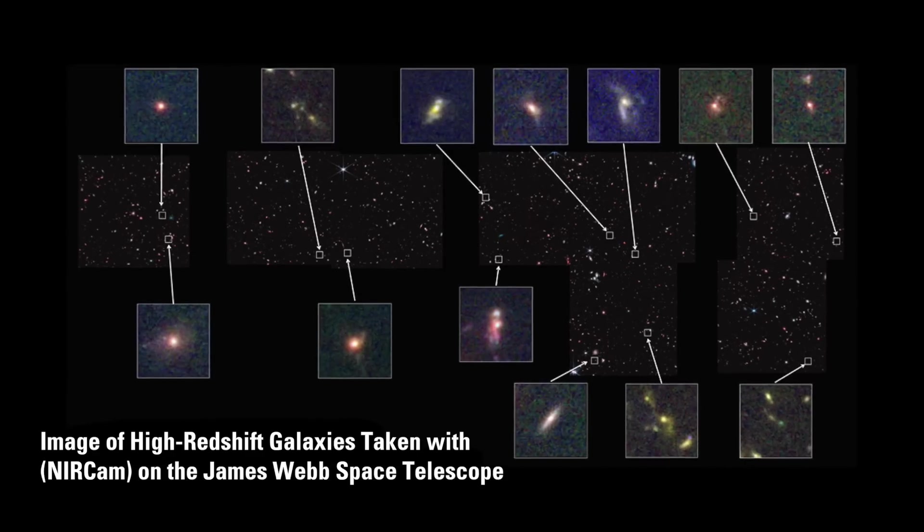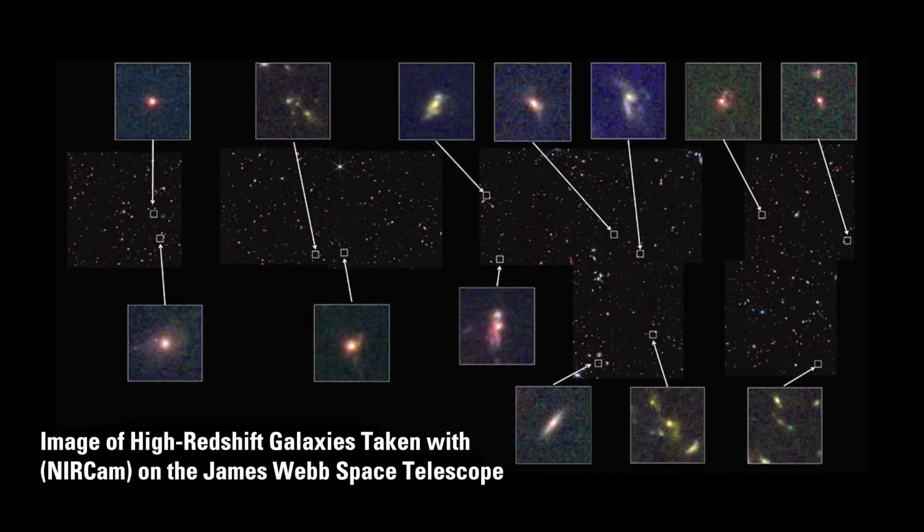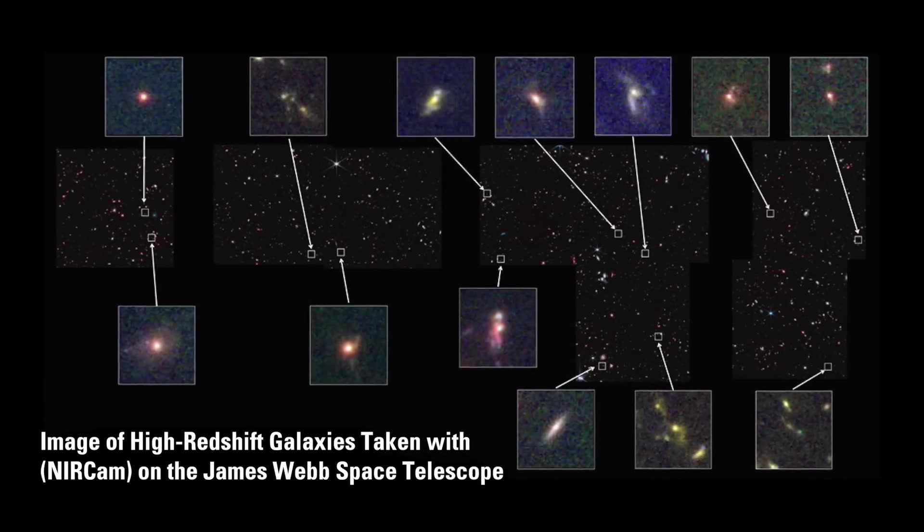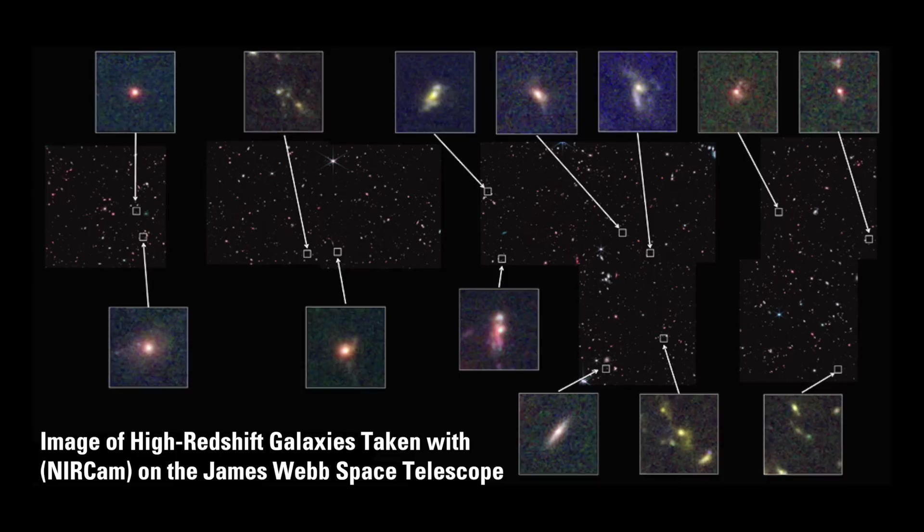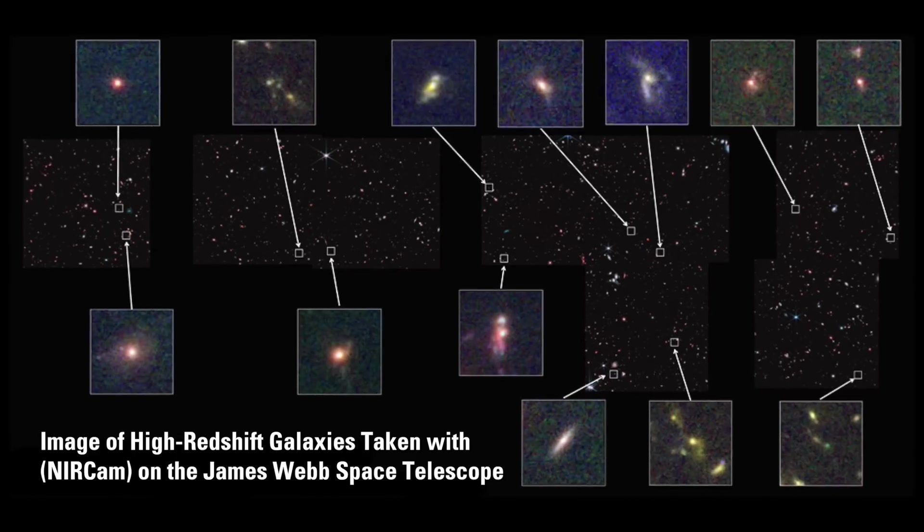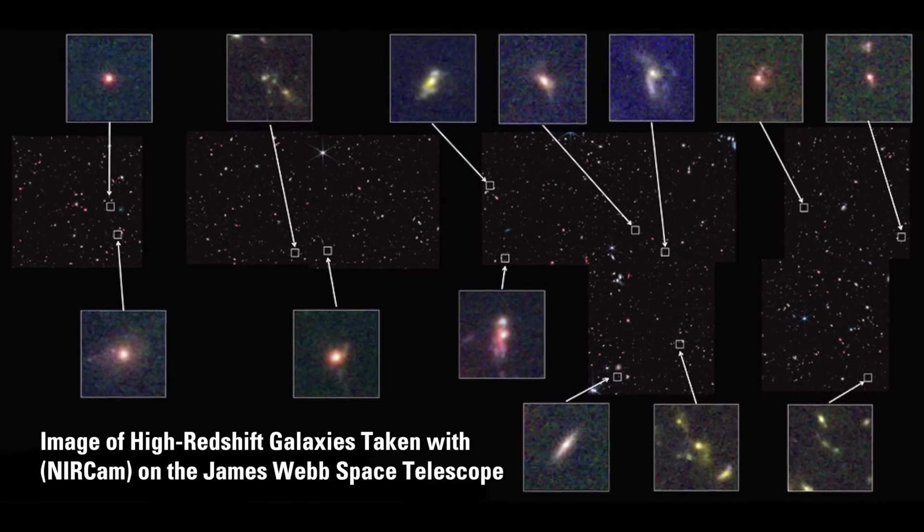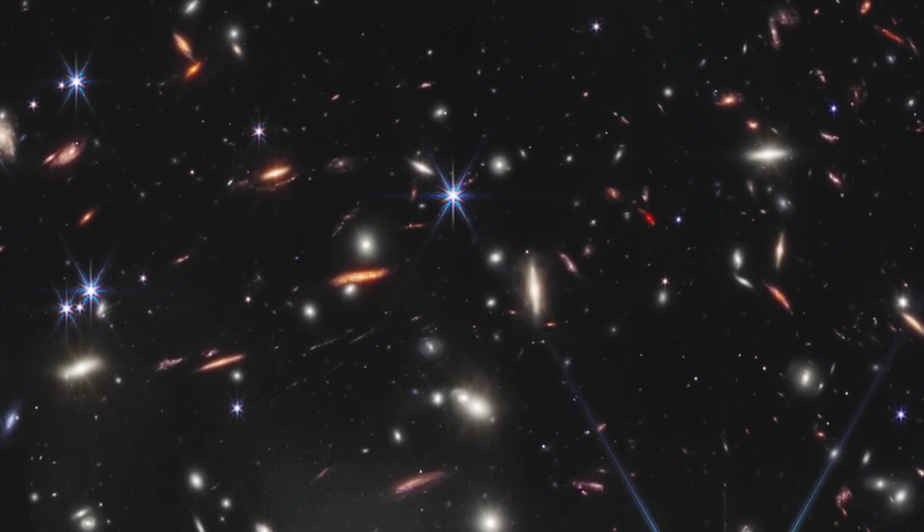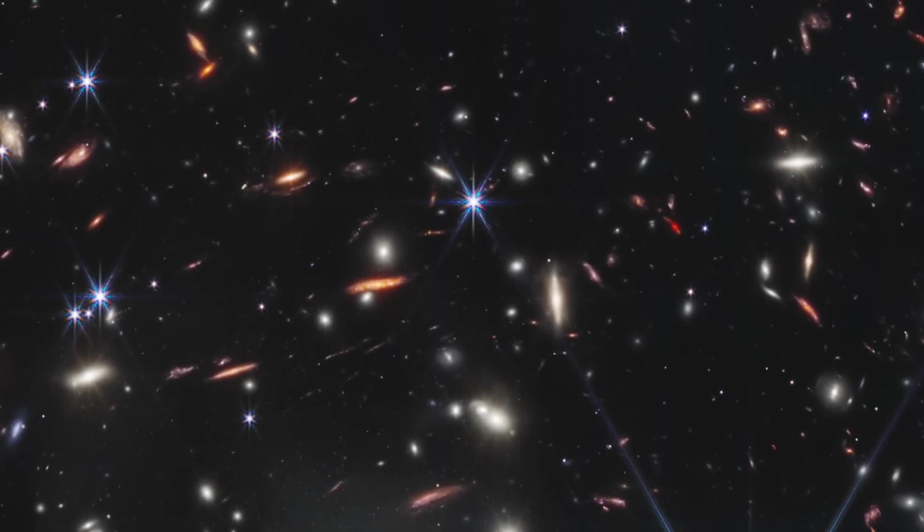In the Electric Universe, we expect to see galaxies that get smaller and fainter, some bluer, some redder, to the limits of the telescope's observational power. That is exactly what Webb's first deep field shows. I predict that deeper web images will further confirm that fact.